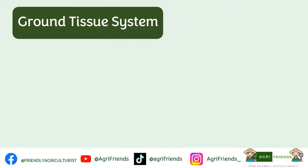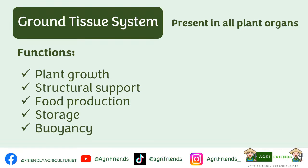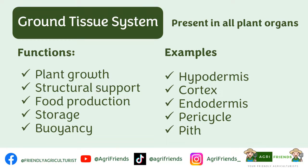The ground tissue system is present in all plant organs. It has a variety of functions based on the cell type and location in the plant. In general, ground tissues serve many critical functions including plant growth, structural support, food production, storage, and buoyancy. Examples include the hypodermis, cortex, endodermis, pericycle, and pith.